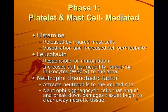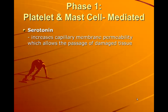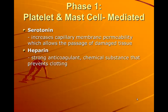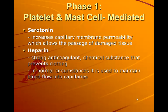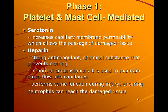Neutrophil chemotactic factor attracts neutrophils to the injured site. Neutrophils are phagocytic cells that engulf and break down damaged tissue, helping to clear away any damaged or necrotic tissue. Serotonin increases capillary membrane permeability, allowing passage of damaged tissue. Heparin is a strong anticoagulant that prevents clotting. In normal circumstances it maintains blood flow into capillaries, and during injury it ensures neutrophils can reach the damaged tissue.